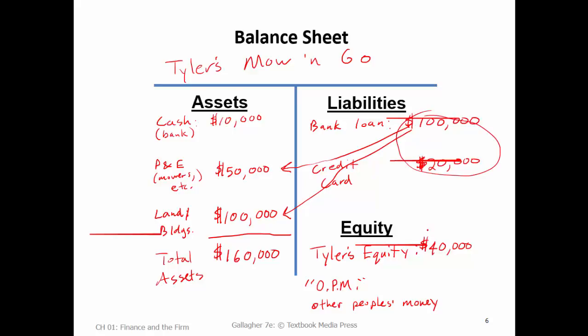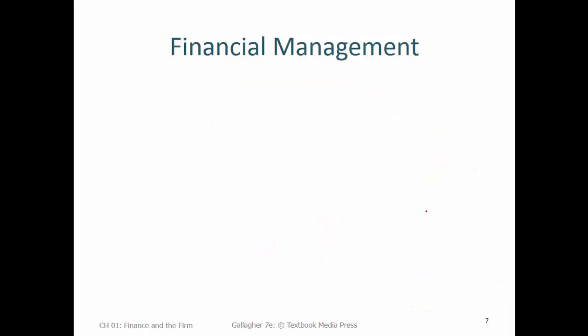If we were a really big corporation, we might have issued some bonds. The economic characteristic is the same — money that we owe. Our liabilities plus the ownership claim in the business total $160,000 because the balance sheet has to balance: total assets equals total liabilities plus equity. So we've got a really good idea of what's going on here, and we can use that to think about the major issues within financial management.